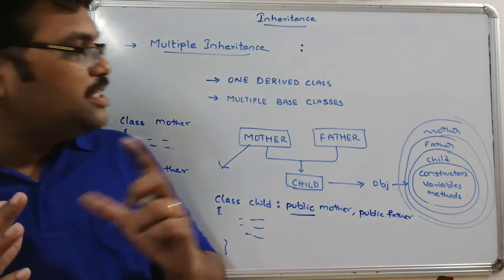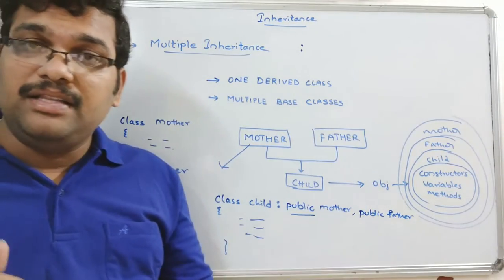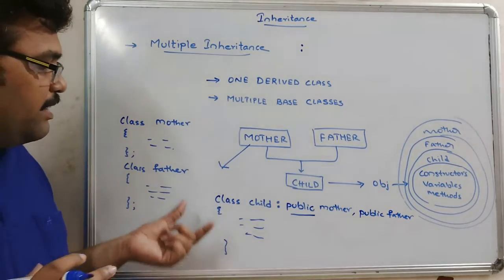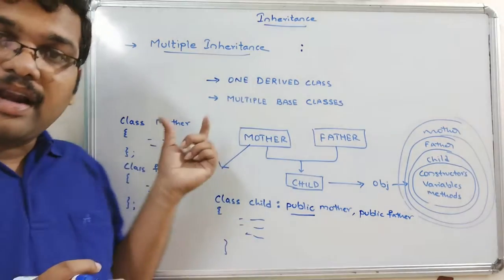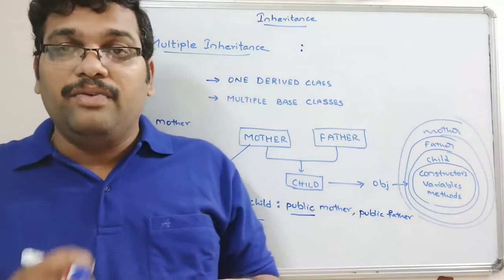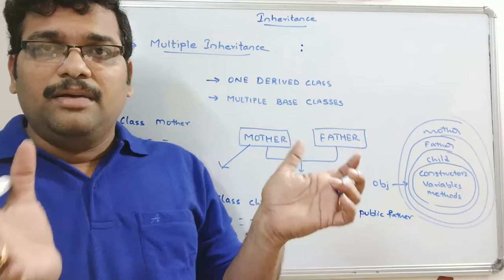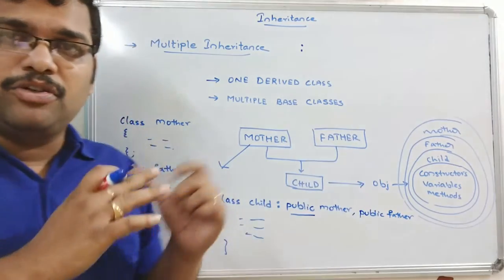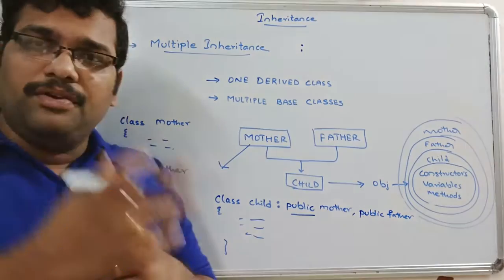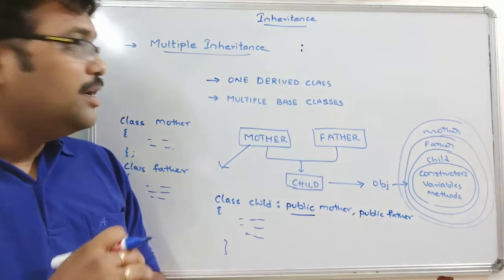This is how we can implement multiple inheritance. Hope you understood. If you have any doubts, don't worry — we'll implement this logic in the compiler. I will show you the demonstration of how multiple inheritance works: we'll write two different classes, derive one class from both, create an object for the child class, and access methods from both the father and mother classes.